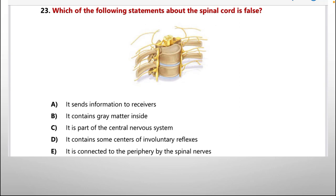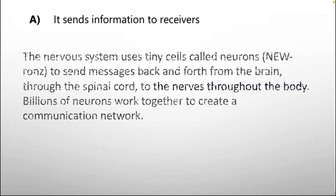For the answer of this question, we are going to interpret every option one by one. Option number A: It sends information to receivers. The nervous system uses tiny cells called neurons to send messages back and forth from the brain through the spinal cord to the nerves throughout the body. Billions of neurons work together to create a communication network. This is false.